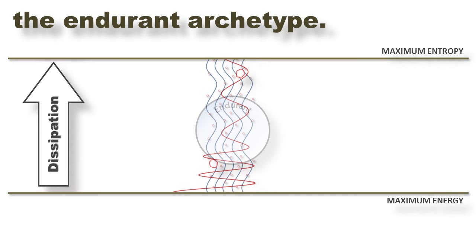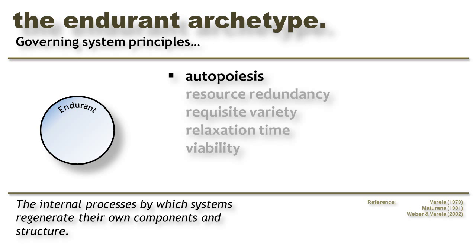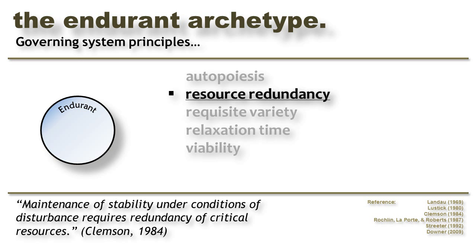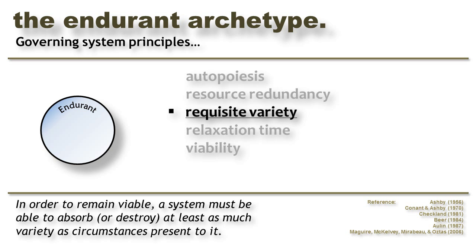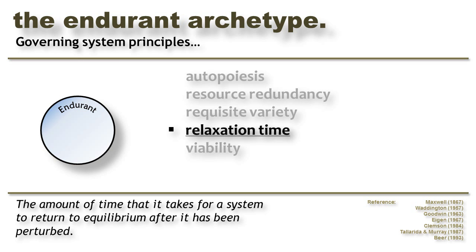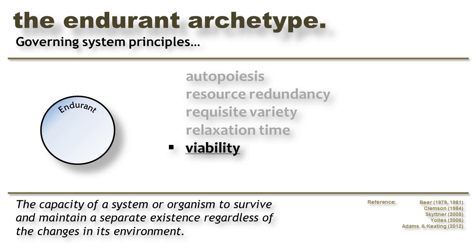The Endurant archetype is governed by the following system principles. First, autopoiesis — this allows the Endurant to stave off entropy by regenerating and repairing its internal components and structure. While the Endurant is not able to reorganize itself, it may still have redundant resources, circuits, or paths that allow it to tolerate damage until it can make repairs. Like all systems, the Endurant is governed by the Law of Requisite Variety, which states that in order to remain viable, a system must be able to absorb all of the variety that it encounters. The Endurant is also governed by the principle of relaxation time: when disturbed by variety, it has to have time to recover before more variety arrives or it will be overwhelmed. Finally, at the root of all these archetypes is the principle of viability — the system's struggle within an antagonistic environment to survive and maintain a separate existence.